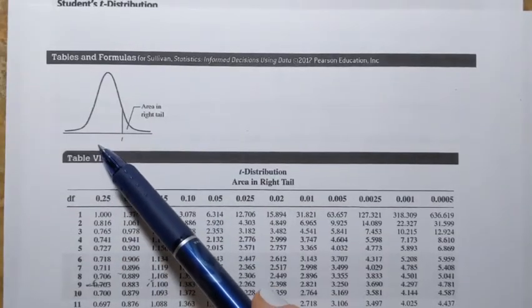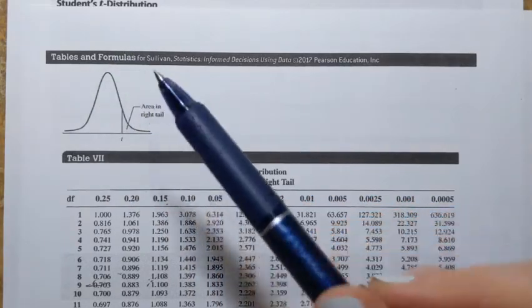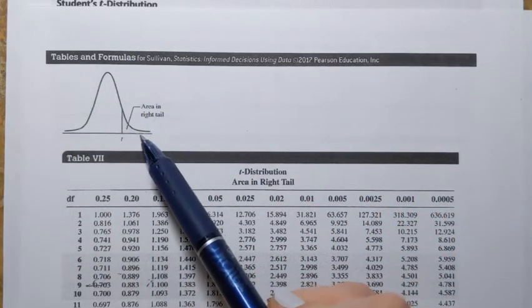And here's the picture from the table. So while it looks very similar to the normal distribution, the t-distribution has more area right here in the tails.